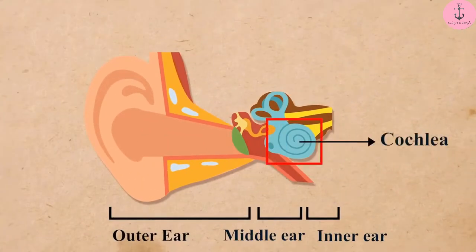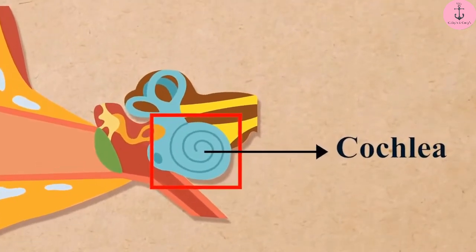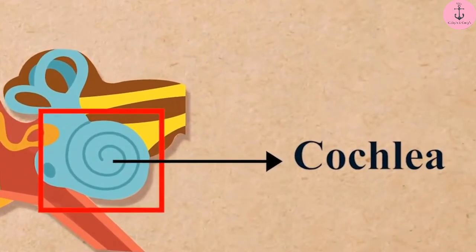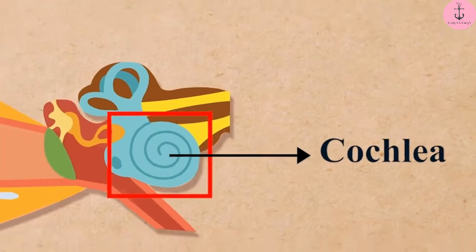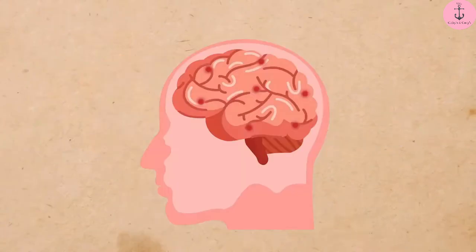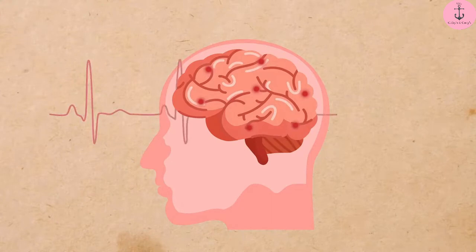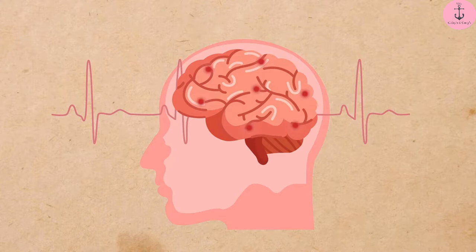The cochlea of the inner ear turns the pressure variations into electrical signals. These electrical signals are sent to the brain through the auditory nerve and the brain interprets them as sound.